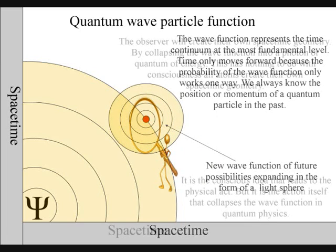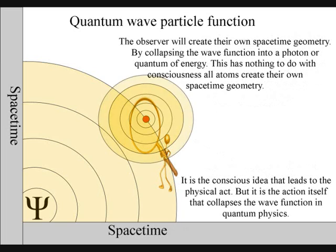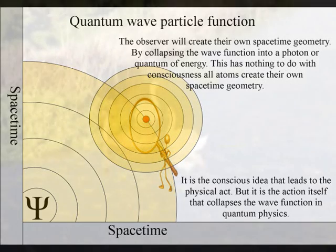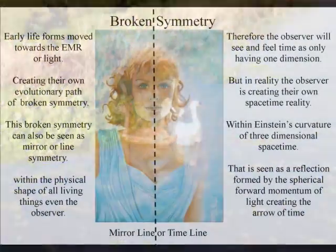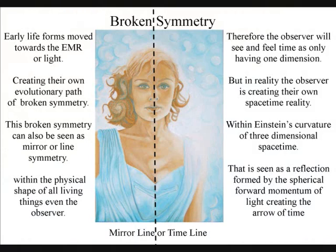The observer will see and feel time as only having one dimension, because there was an evolutionary advantage in seeing time this way. But in reality, the observer is creating their own space-time geometry within the fabric of Einstein's curvature of three-dimensional space-time.